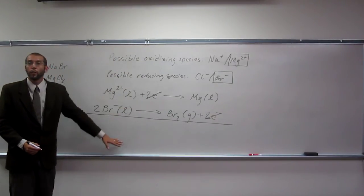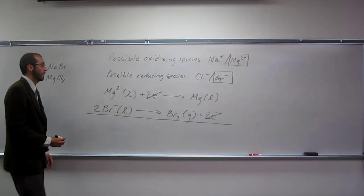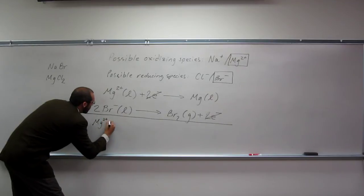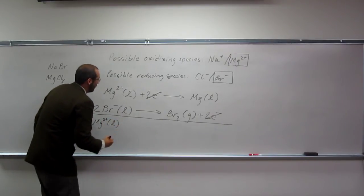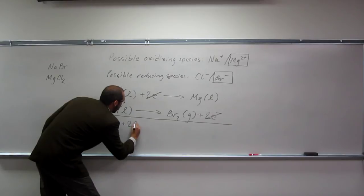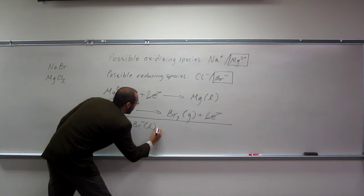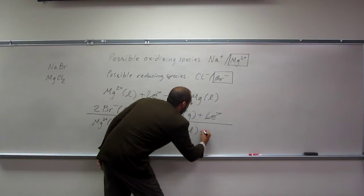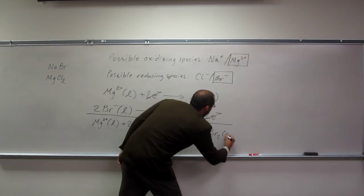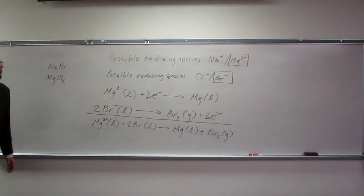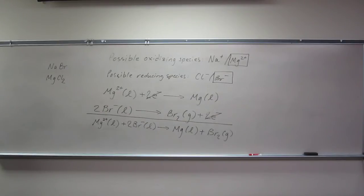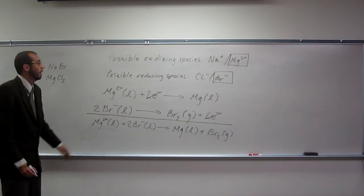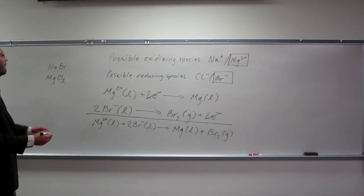Now we write the overall reaction for this electrolytic cell: Mg2+(l) + 2Br-(l) → Mg(l) + Br2(g). That's the overall cell reaction.